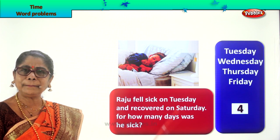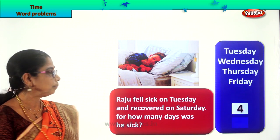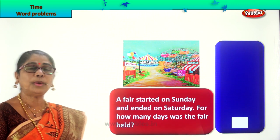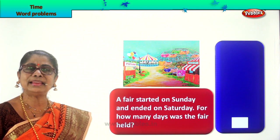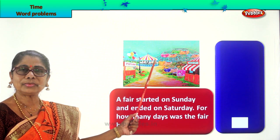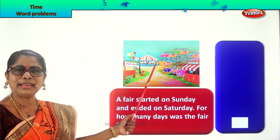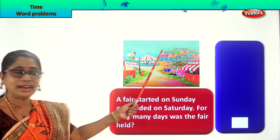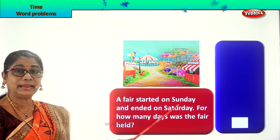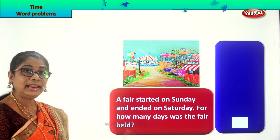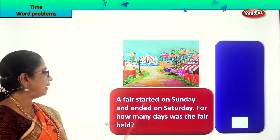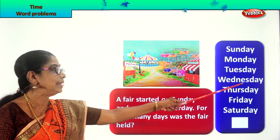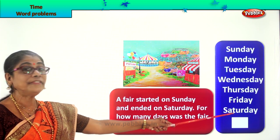Did you enjoy the word problem in time? Let's look at another. Here is a lovely place — a fair! What is a fair? You go there to play on the merry-go-round, different games. You can eat, there's a balloon game, a jumping castle, and so much more. Mummy takes you to a fair! Let's read: A fair started on Sunday and ended on Saturday. For how many days was the fair held? The fair started on Sunday, then Monday, Tuesday, Wednesday, Thursday, Friday, and the fair ended on Saturday.